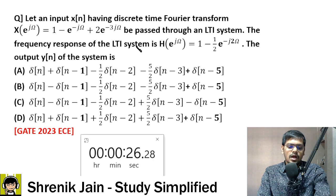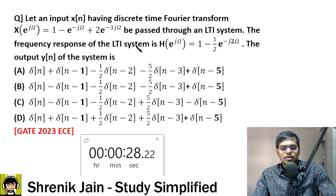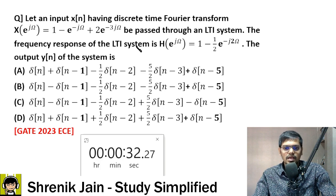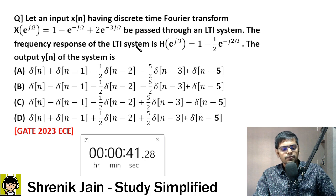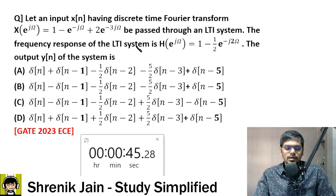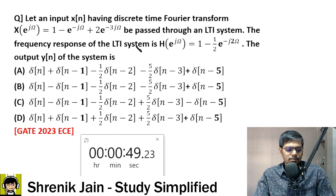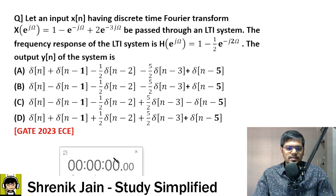In an LTI system, y(n) = x(n) convolved with h(n). Use DTFT to convert convolution to multiplication. Substitute the given values, then apply the inverse DTFT to get the answer. Very simple. If doing inverse DTFT is difficult, use the Z-transform concept instead. It's pretty easy and can be solved in 45 seconds.